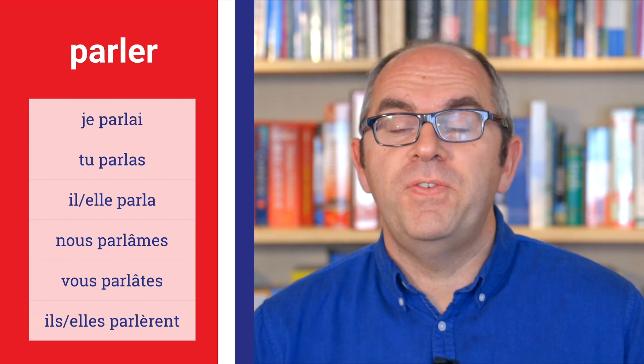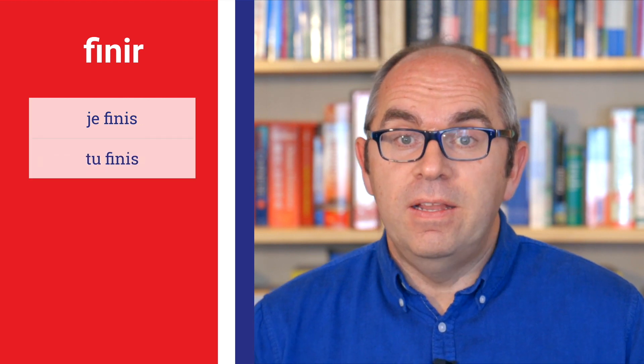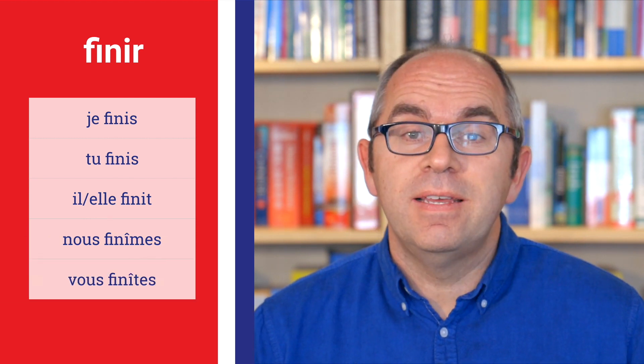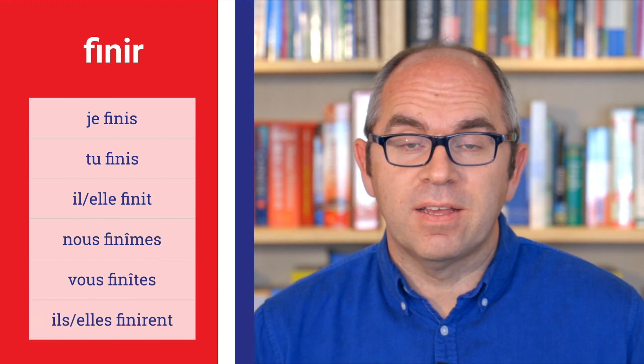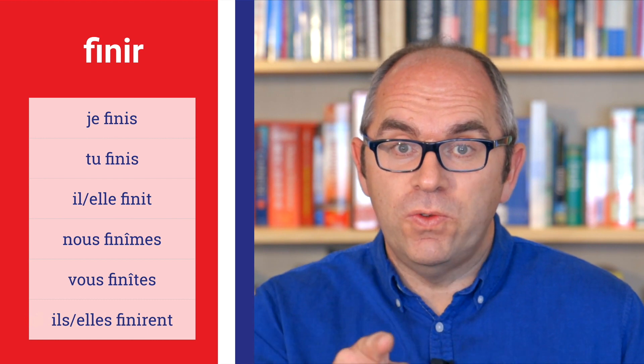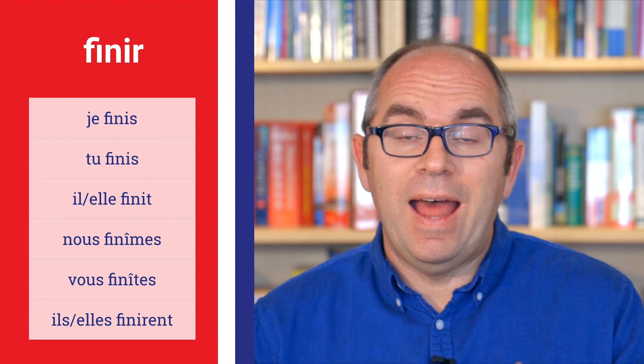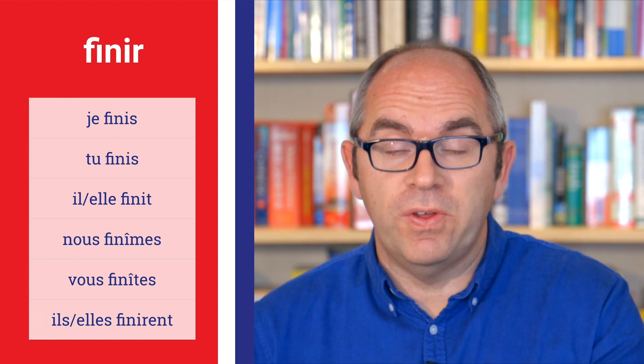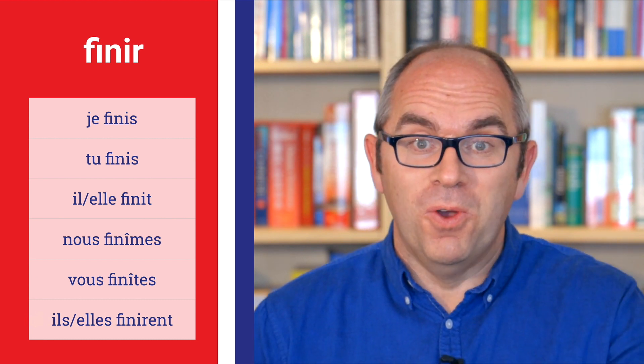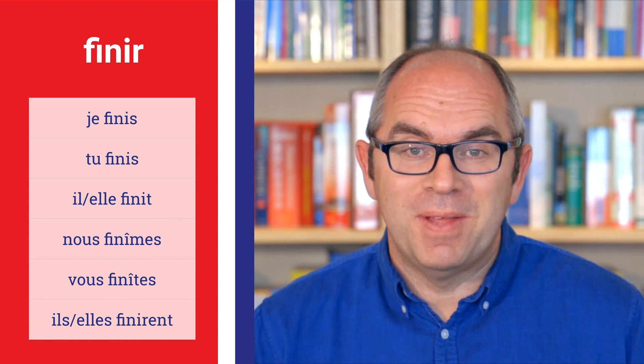Now let's look at an -ir verb. We'll take finir: je finis, tu finis, il finit, elle finit, nous finîmes, vous finîtes, ils finirent, elles finirent. So that's finir — an -ir verb in the past historic tense. I finished, you finished, he finished, she finished, we finished, you all finished, they finished.